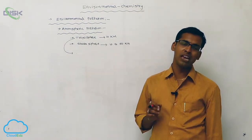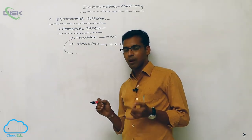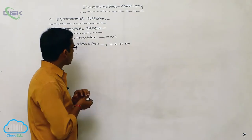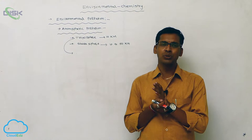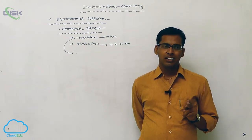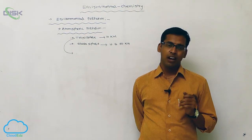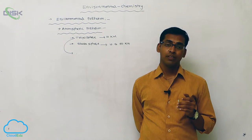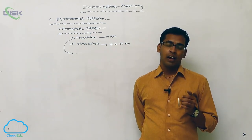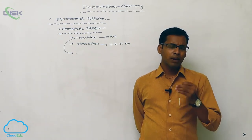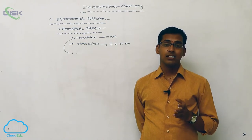The stratosphere undergoes damage due to dinitrogen oxides, oxides of sulfur, and oxides of carbon. The troposphere is polluted due to gaseous particles and particulate particles. The gaseous particles include oxides of sulfur, oxides of nitrogen, hydrocarbon decomposition products, oxides of carbon, ozone, and acid rain. The particulate particles include dust, mist, smog, and smoke.